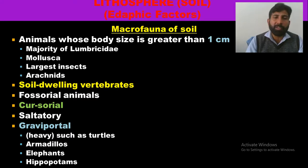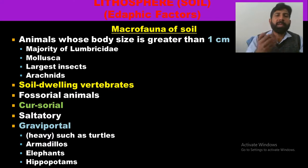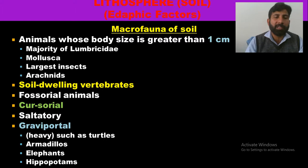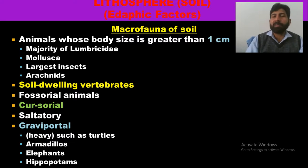Macrofauna can be further categorized: fossorial animals form burrows in the soil, such as certain rodents and porcupines; cursorial animals move on the soil surface; saltatorial animals have jumping ability like kangaroos; and graviportal animals are large and heavy such as turtles, armadillos, elephants, and hippopotamuses.